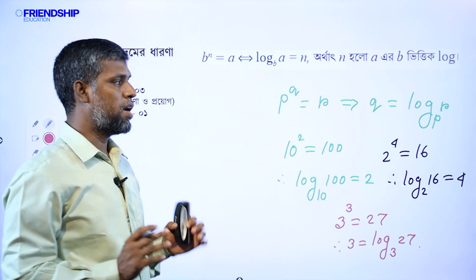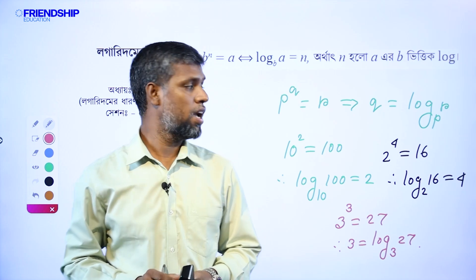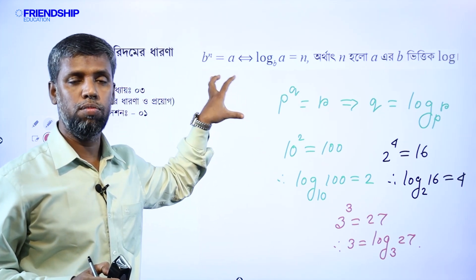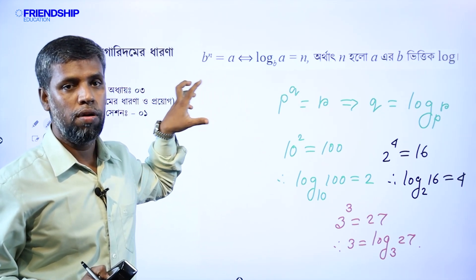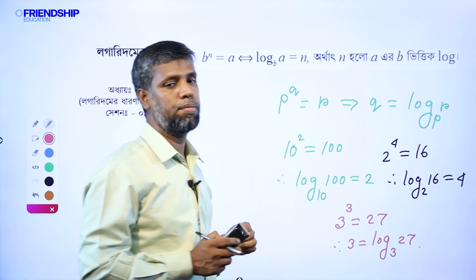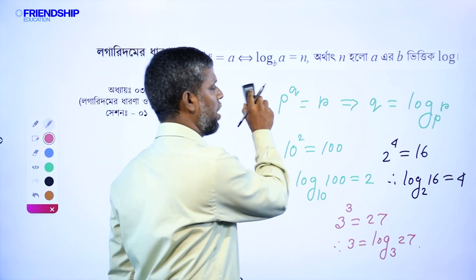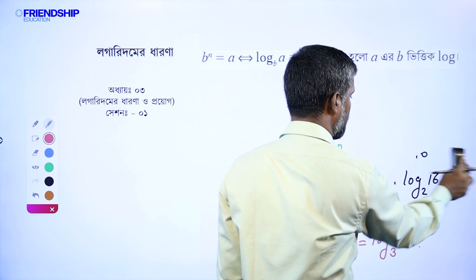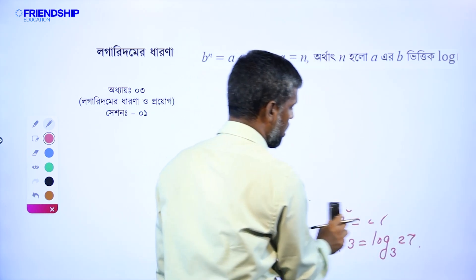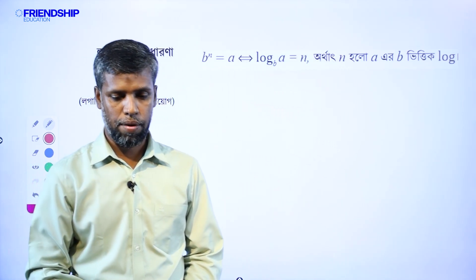So, log is equal to 1 definition. When you are equal to 1, the math is equal to 1 in this chapter. I am going to tell you how can I design it.